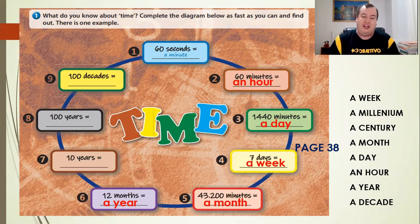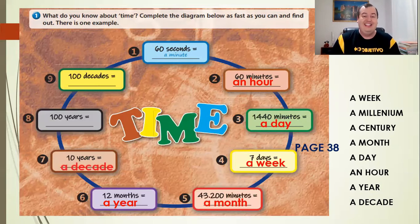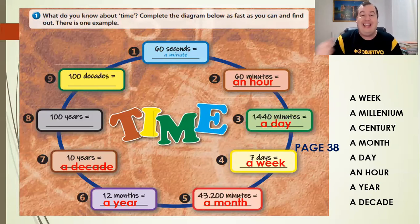12 months, a year. And what about ten years? How do we call it in English? What is the name of ten years in English? Ah, ten years we have a decade. Quase português, né? In português, we say uma década. In English, we say a decade.